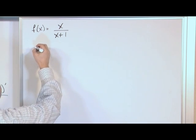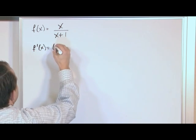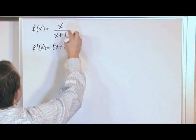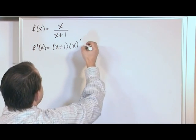So what we'll have is f'(x) will be the bottom, x plus 1, times the derivative of the top. I'm going to write the top and put the derivative mark to remind me to take that derivative later.